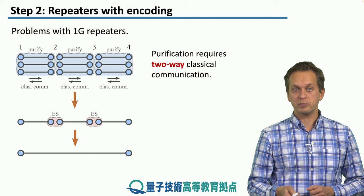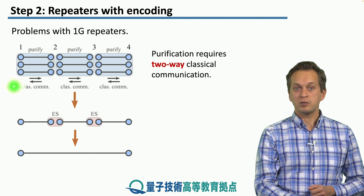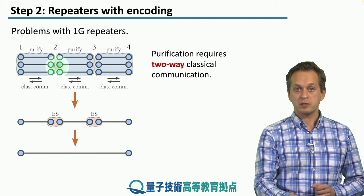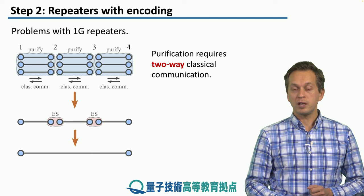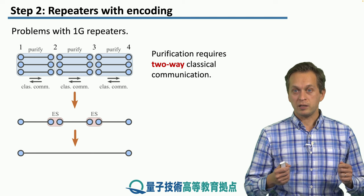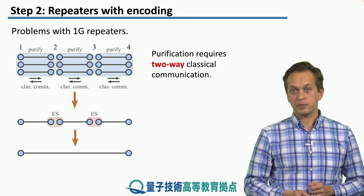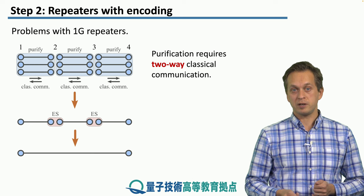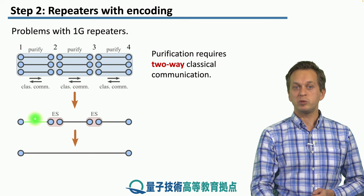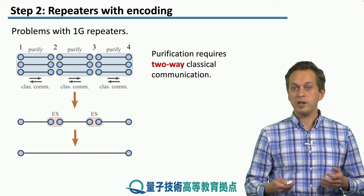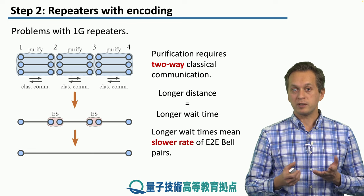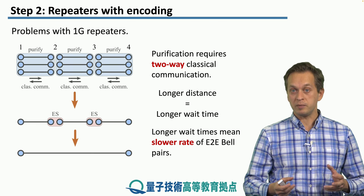A crucial part of the purification protocol is two-way classical communication. Here we're using three bell pairs because we're trying to detect both X and Z errors. If nodes 1 and 2 want to engage in the purification protocol, they need to measure two of those three pairs and exchange classical information about the outcomes of the measurements. They cannot proceed until they receive this classical information — that way they know whether to keep the first pair or discard it. For short distances, this two-way classical communication might not be a huge problem, but longer distance means longer waiting time, which slows down the rate of end-to-end bell pairs being created.